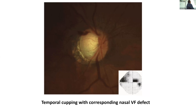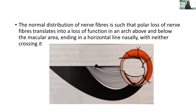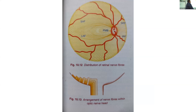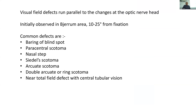In advanced cupping, this is the way nerve fibers are arranged and how loss of nerve fibers is projected in the visual fields. If nerve fibers are lost in the superotemporal region, the field effect will be in the inferonasal quadrant — they are projected in the opposite quadrant.